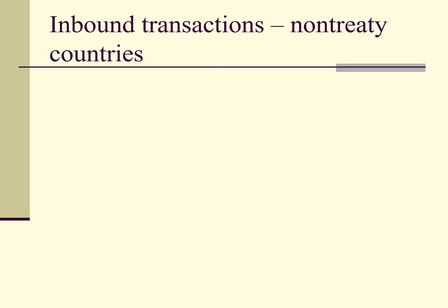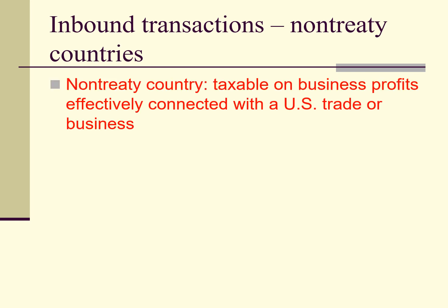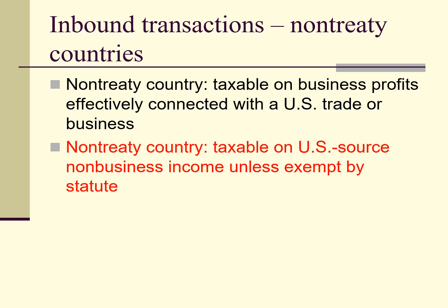Now let's discuss the rules for foreign companies that are not residents of treaty countries. If a foreign company is not a resident of a treaty country, then its U.S. source business profits are taxable in the United States if they are effectively connected with the conduct of a U.S. trade or business. If a foreign company is not a resident of a treaty country, then its U.S. source non-business income is taxed in the United States, and moreover, this income is subject to U.S. withholding at source.